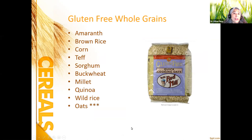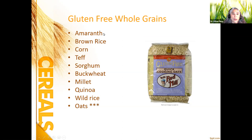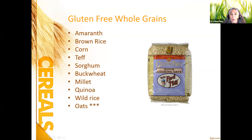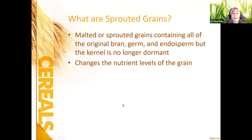There are some gluten-free whole grains available. Gluten is a protein found in certain grain products and has been implicated in celiac disease, allergies, and food sensitivities. Gluten-free options include amaranth, brown rice, corn, teff, sorghum, buckwheat, millet, quinoa, and wild rice. Oats are listed with an asterisk because not all oats are gluten-free depending on where they're processed, so if you're being strict about gluten, make sure the package specifically says 'gluten-free.'